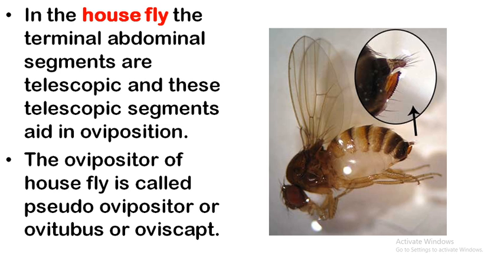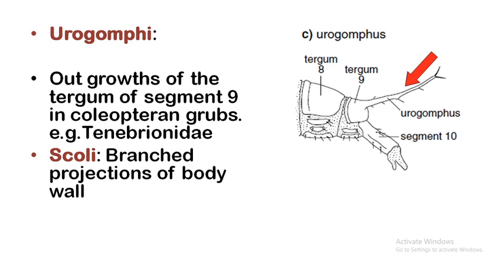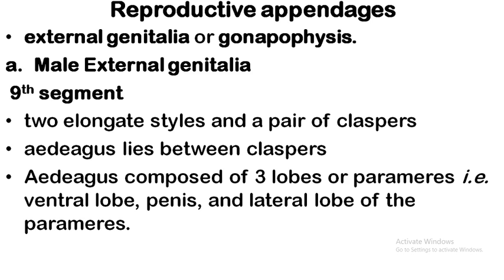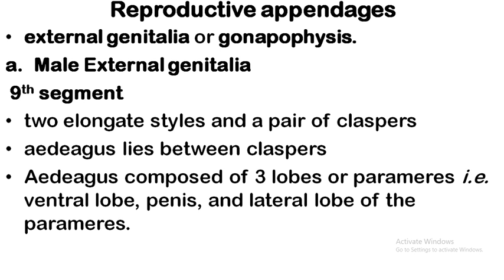Other abdominal structures include: the terminal spine, found in larvae of hawk moths, emerging from the 8th abdominal segment; urogomphi, which are outgrowths of the tergum of segment 9 in coleopteran grubs, for example from the family Tenebrionidae; and the scoli, which are branched projections of the body wall extending from the 9th abdominal tergum.